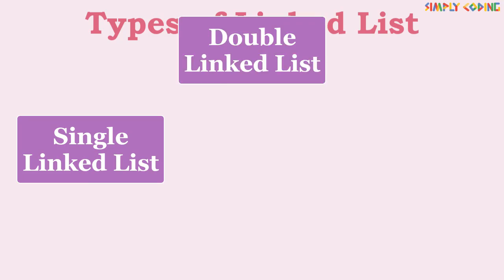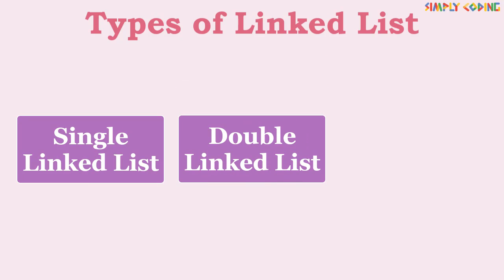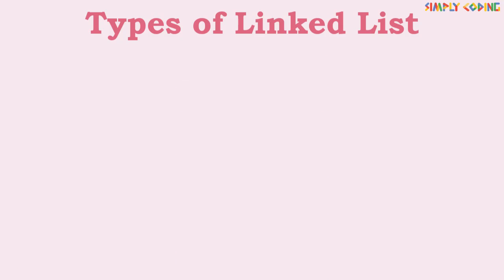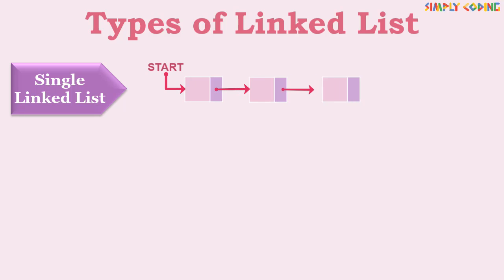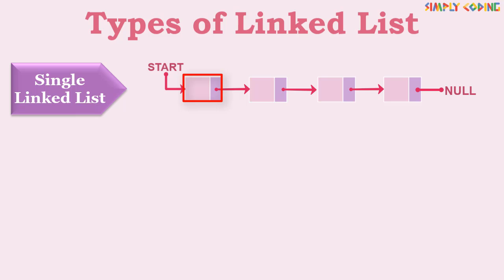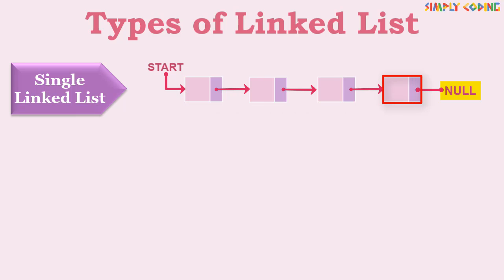Linked lists are of three types: single linked list, double linked list, and circular linked list. In a single linked list, each node has one link field which points to the next node, so you can only traverse one way. The first element is called the head or start element and the last element points to null.